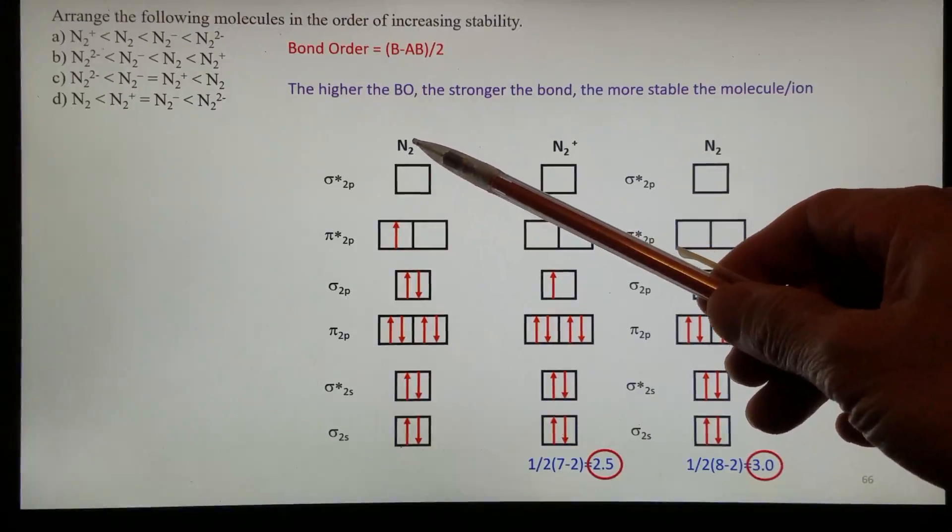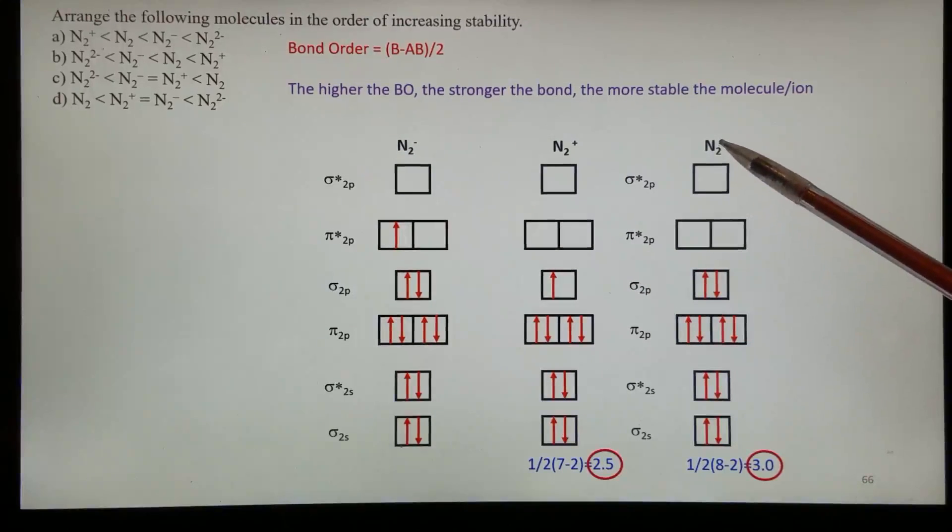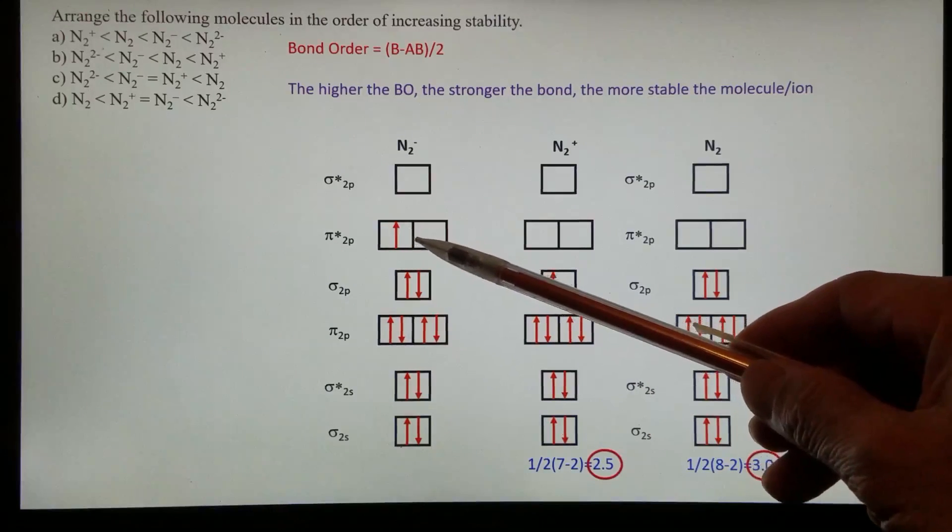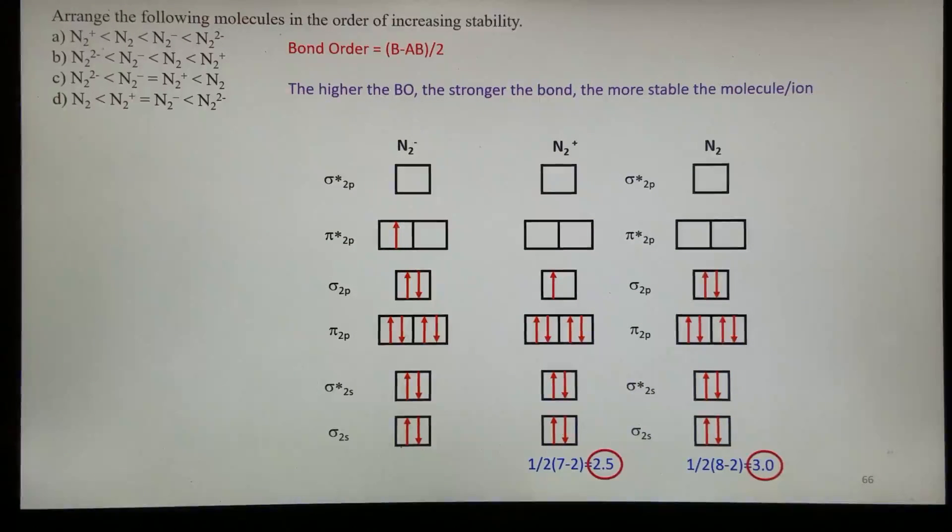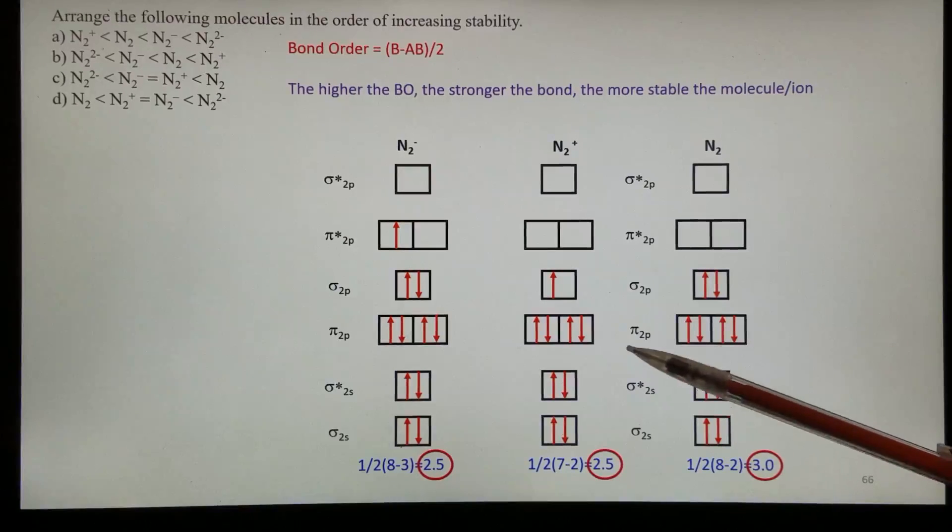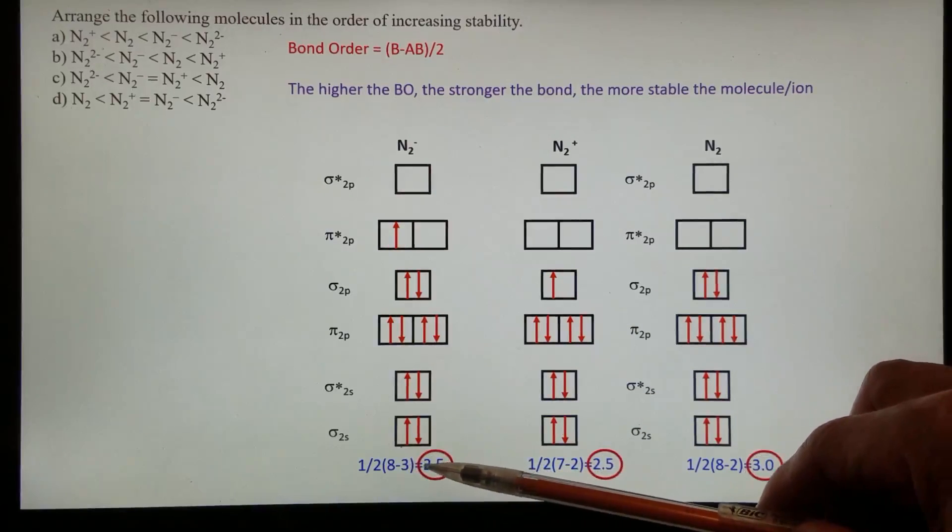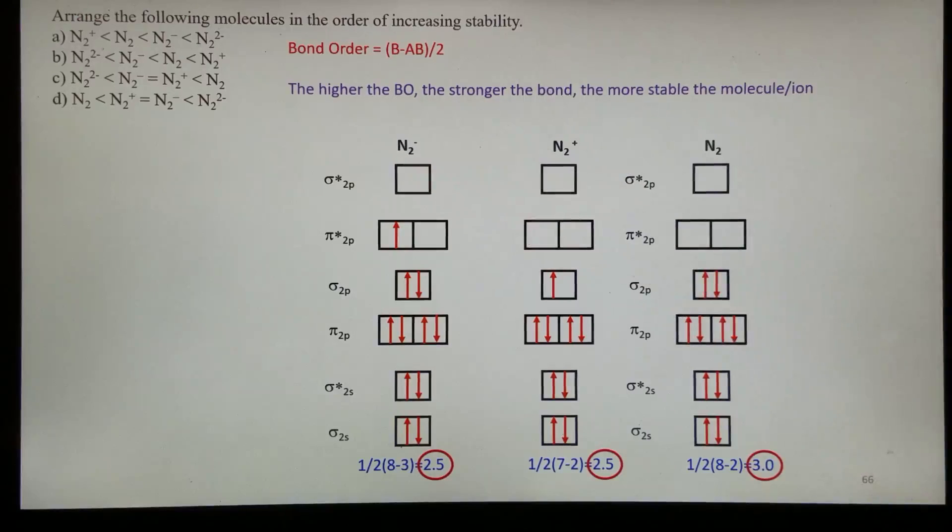N2 minus means it should have one more electron than N2, than the neutral molecule. One more electron started occupying this anti-bonding 2 pi orbitals, pi 2p orbitals. So the number of bonding electrons still stay the same, 8, just like in nitrogen molecule, but the anti-bonding electrons, we have 2 plus 1, 3. So therefore, the bond order is 2.5. You see, 2.5, 2.5, these two actually have the same bond order.